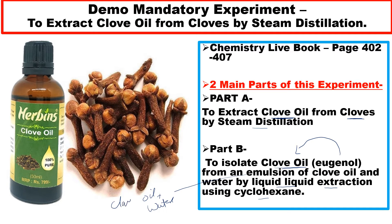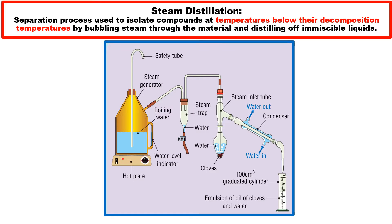The name for clove oil is eugenol. An emulsion is a mixture of oil and water, so your clove oil and water will appear as a milky, cloudy color. Steam distillation is used to separate and isolate compounds at temperatures below their decomposition temperatures by bubbling steam through the material — in this case, the cloves — and distilling the immiscible liquids. Immiscible substances are those that don't mix, such as oil and water.